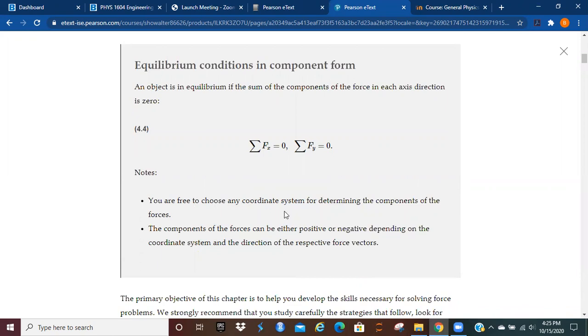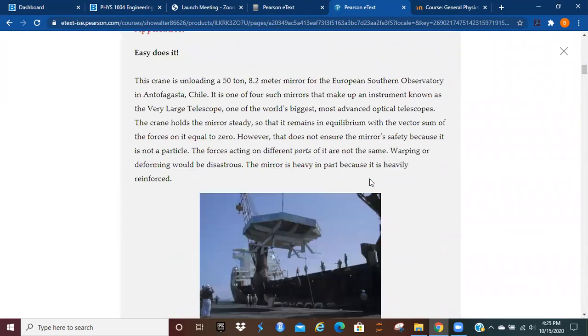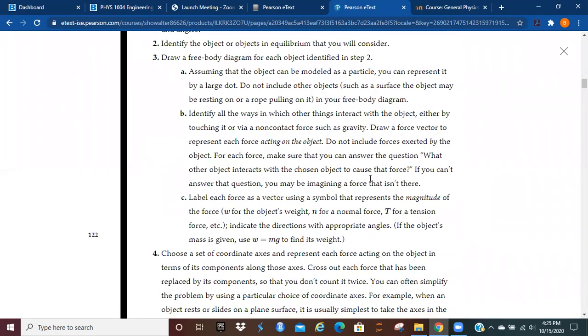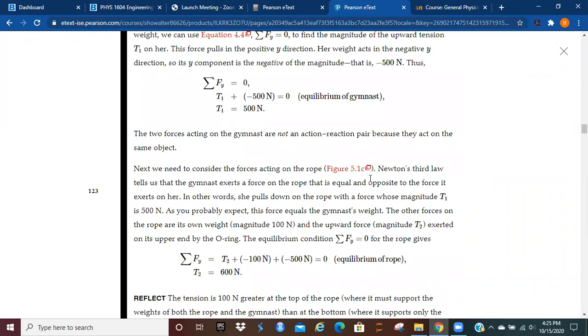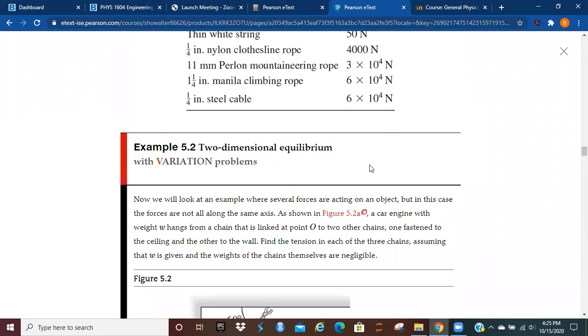Now, we're free to choose any coordinate system for determining the components. You don't have to have x go this way, straight, and then y up and down. As you saw in the diagram that had been drawn, we can change that to anything we would like. As long as x and y are orthogonal to each other, you're going to be fine.